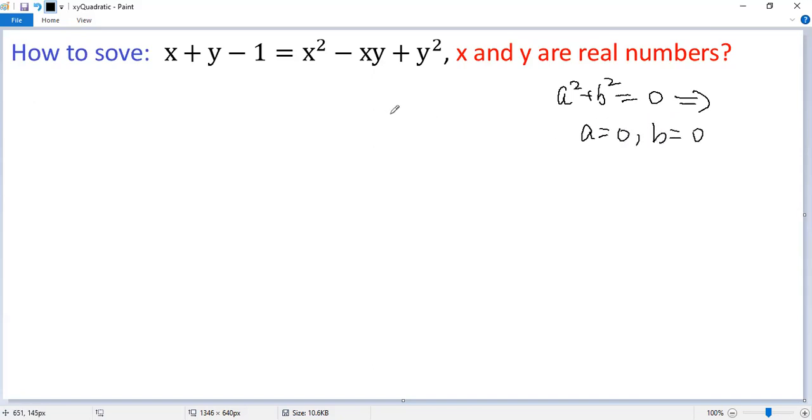So let's see if you can change the given equation to a sum of squares. To do that, let's move the left side to the right side. So we get x squared minus xy plus y squared minus x minus y plus one equals zero.